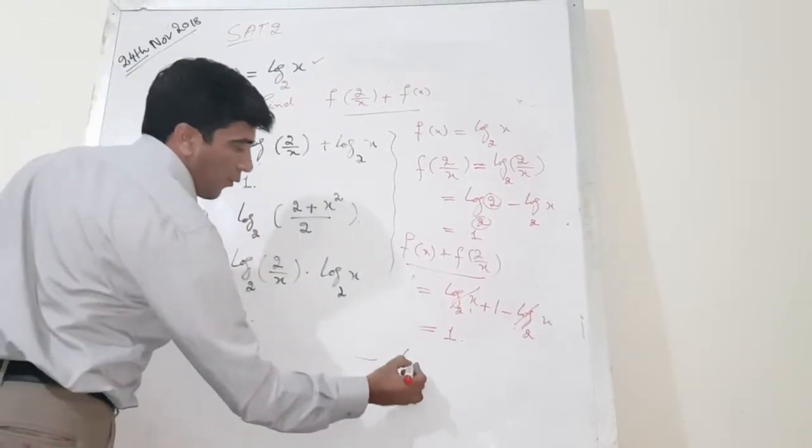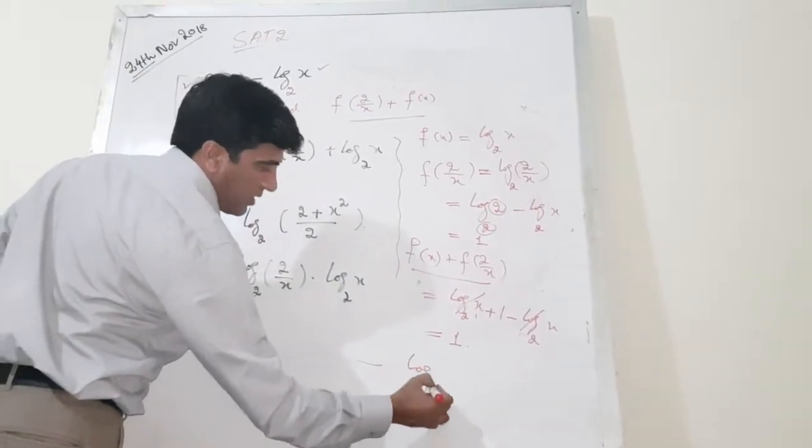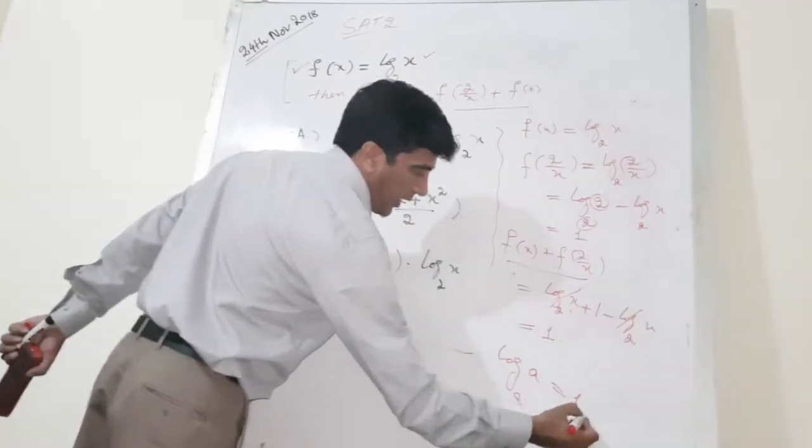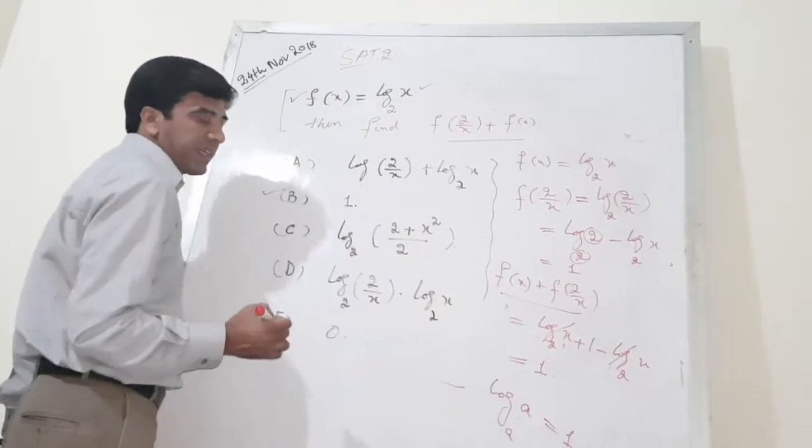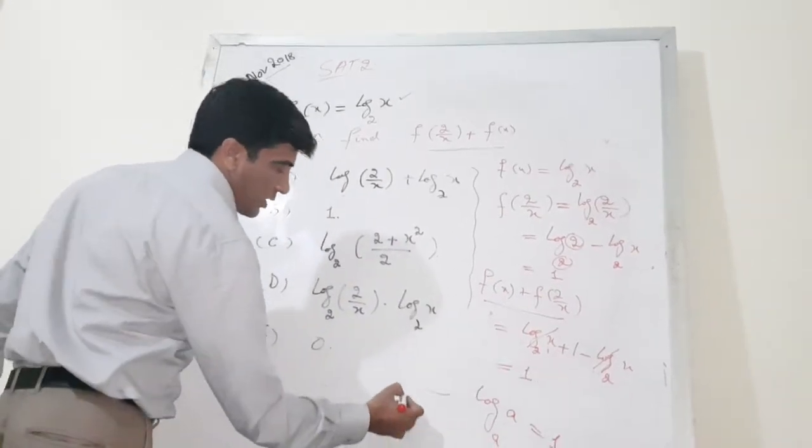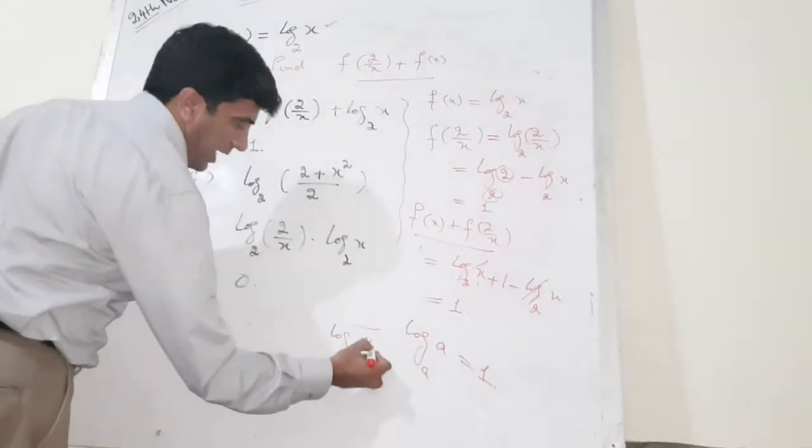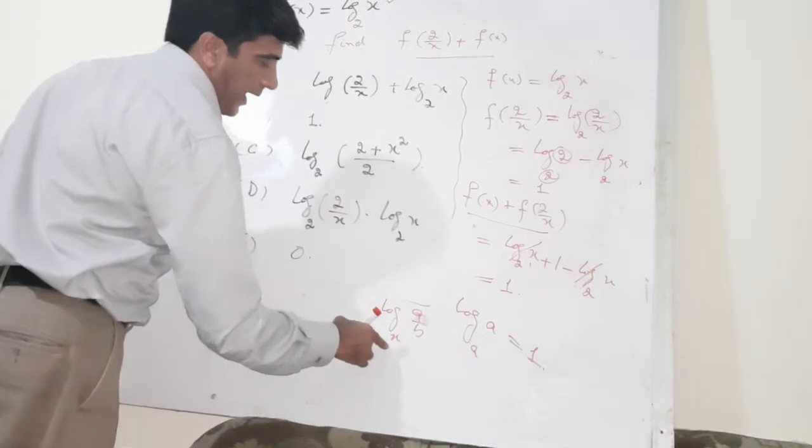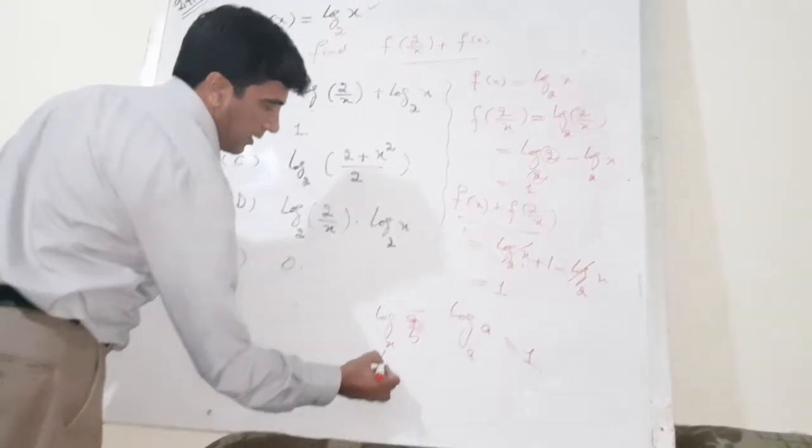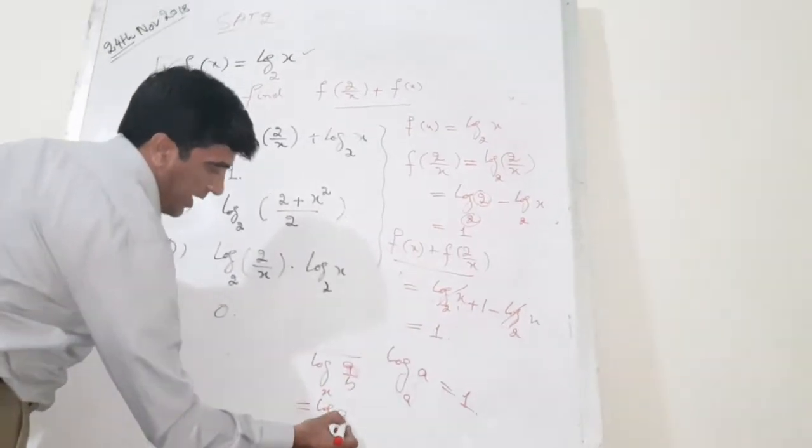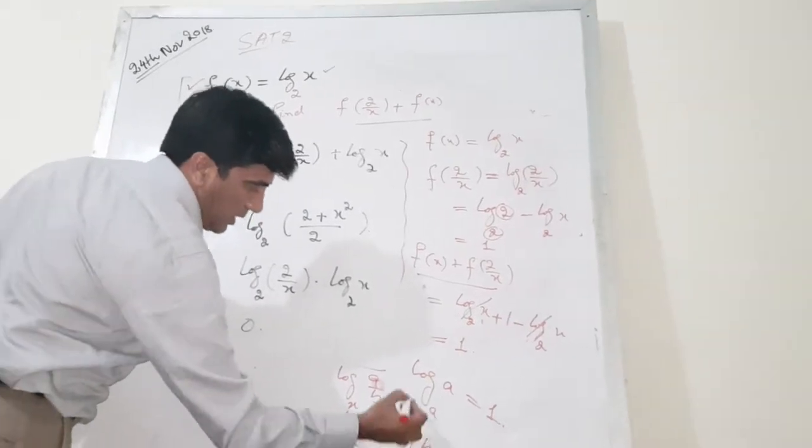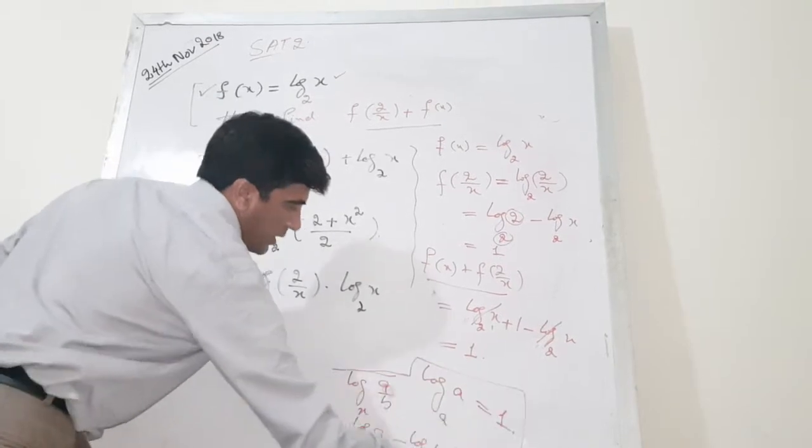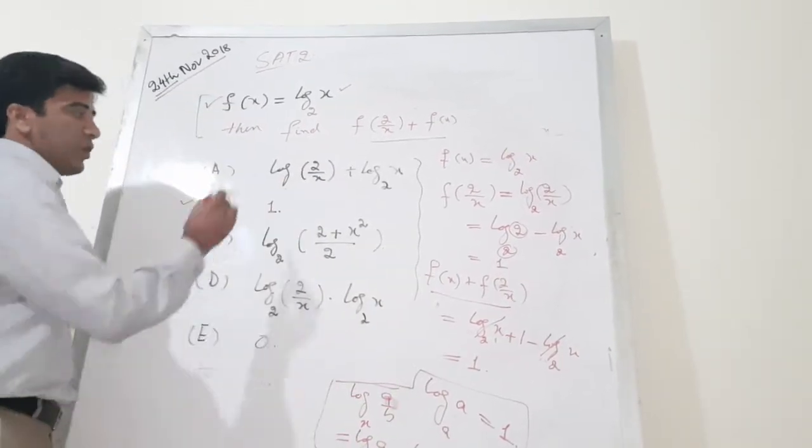One rule: when you have this number and this number are equal to each other, the answer is always 1. And the second thing which I used - whenever you have x, let's say a over b, log base x of a/b, then log base x of a minus log base x of b. These are the rules which I used to crack this question.